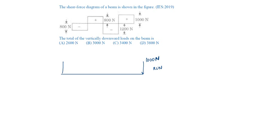This should also be 800 downwards. There should be a reaction here and a reaction here of magnitude equal to the sum. So it is 2200 here, and here it is the sum of these two, that is 1600, and here a point load equal to the sum of these two magnitudes, that is 2000.